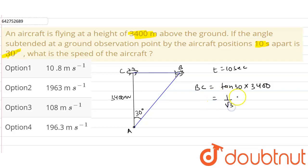Now tan 30 is 1 by root 3 into 3400 meters. Now we know the distance the plane covered, this distance D, and the time in which it covers this distance.